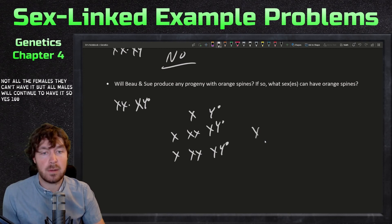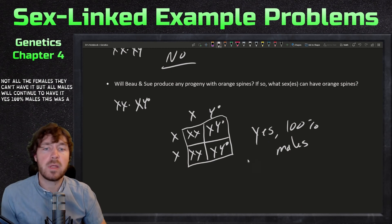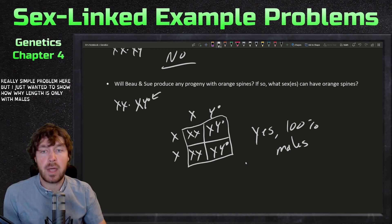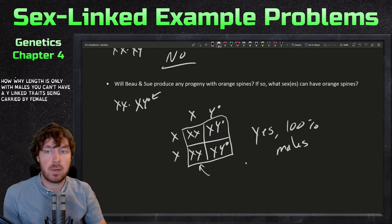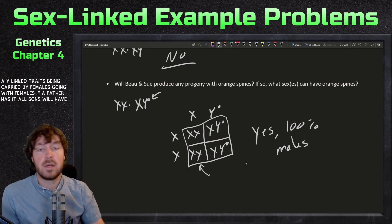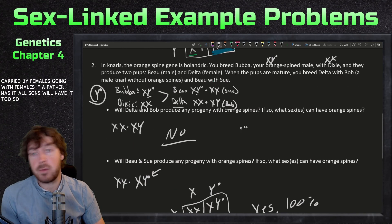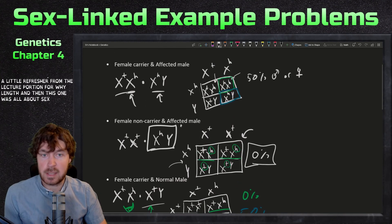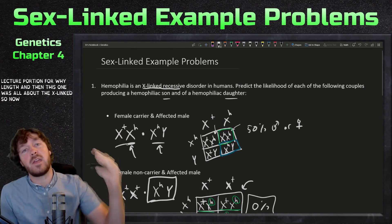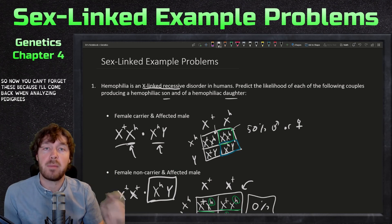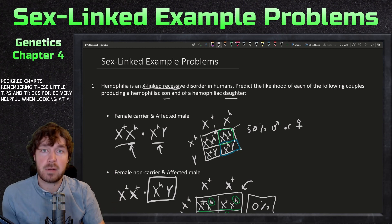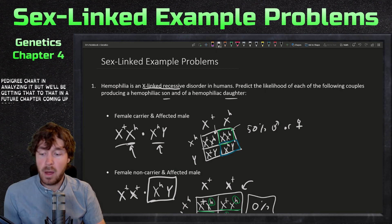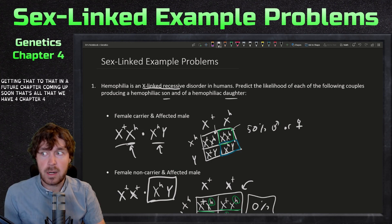I know this was a really simple problem here, but I just wanted to show how Y-linked is only with males. You can't have a Y-linked trait being carried by females, going with females. If a father has it, all sons will have it too. That was just a little refresher from the lecture portion for Y-linked, and then this one was all about X-linked. Now you can't forget these because these will all come back when analyzing pedigree charts. Remembering these little tips and tricks will be very helpful when looking at a pedigree chart and analyzing it, but we'll be getting to that in a future chapter coming up soon.